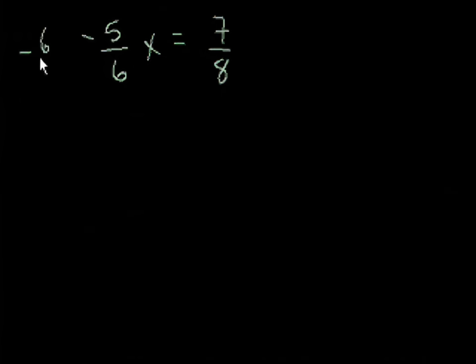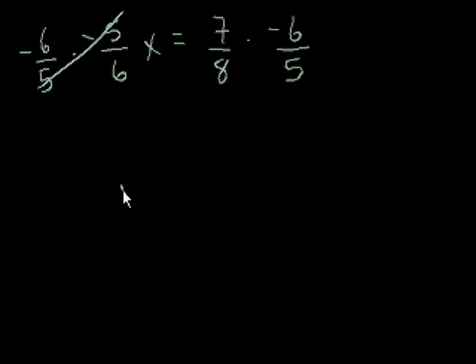So same thing. What's the reciprocal of minus 5/6? Well, it's minus 6 over 5. We multiply that. If we do it on the left-hand side, we have to do it on the right-hand side as well. Minus 6 over 5. The left-hand side, the minus 6 over 5 and the minus 5/6 cancel out. We're just left with x.